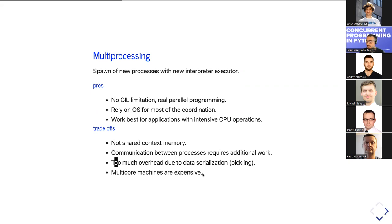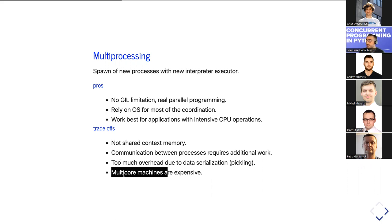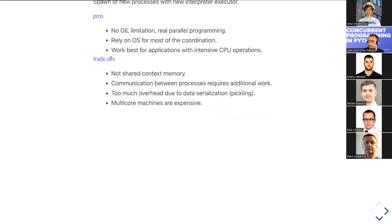Passing information from the parent process to child processes requires pickling — serializing Python objects into a chain of bytes. Not everything is serializable, so you can't pass every object to a new process. Also, multi-core machines are expensive, especially hosted machines, though testing locally is fine.